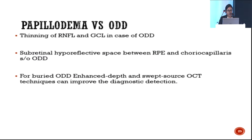Key differences between papilledema and optic disc drusen: in optic disc drusen, RNFL and ganglion cell layer values are thinned or normal, whereas in papilledema RNFL is thickened in initial stages. In optic disc drusen there is a subretinal hyperreflective space between the retinal pigment epithelium and choriocapillaris. For buried optic disc drusen, enhanced depth imaging and swept-source OCT are of more value.